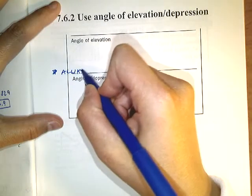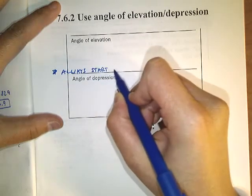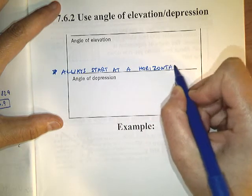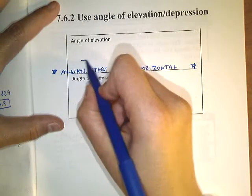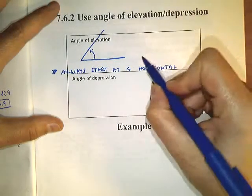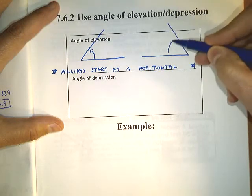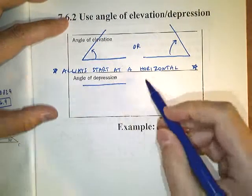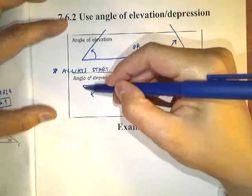Both of these always start at a horizontal. An angle of elevation is defined as starting at a horizontal position and rotating upward away from it. You can start on the right side and rotate up, or start on the left and rotate up — these are examples of angles of elevation. An angle of depression is the exact opposite: you start at a horizontal and rotate down however many degrees.